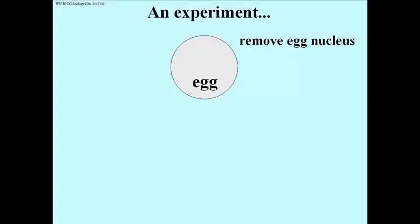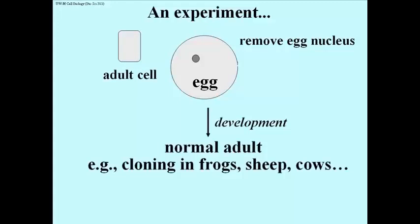So now we have what's called an enucleated egg, an egg without a nucleus, and we can take the nucleus of an adult cell and transplant it into the egg. The egg begins to develop, and under the right conditions, and with a bit greater complexity than I'm showing here,